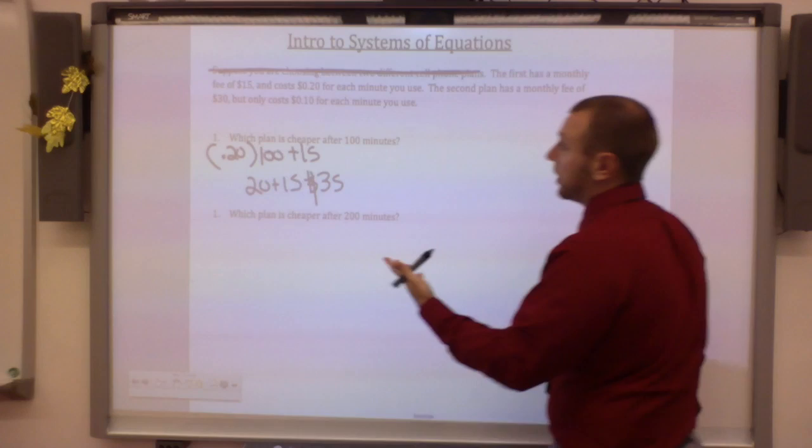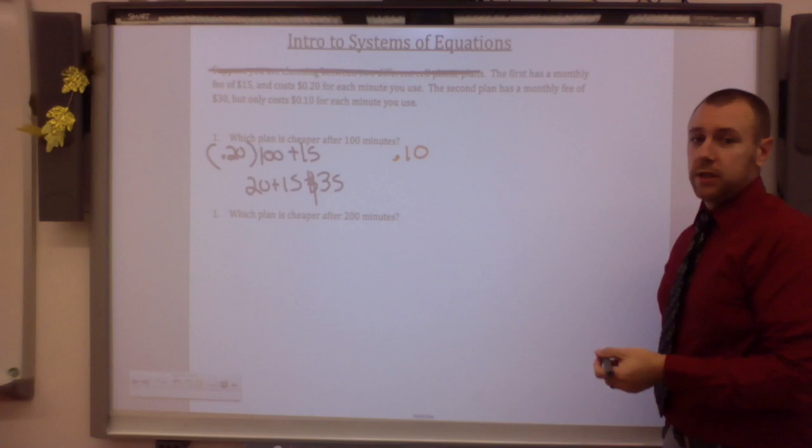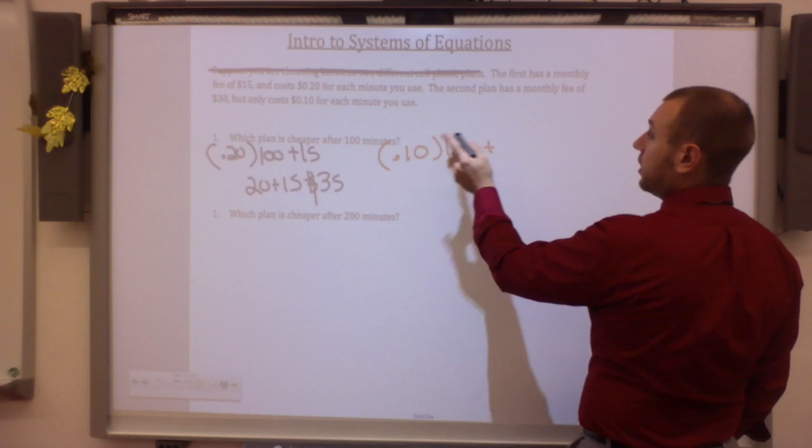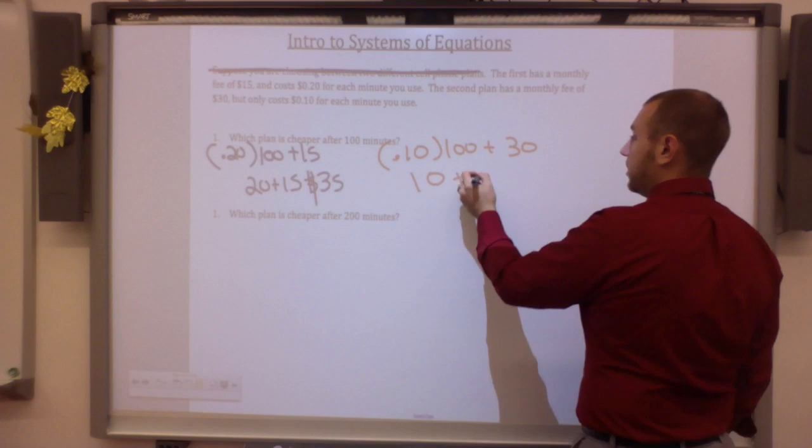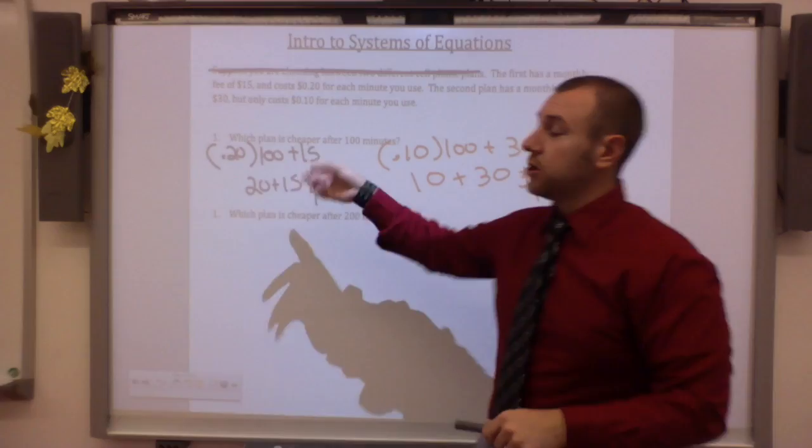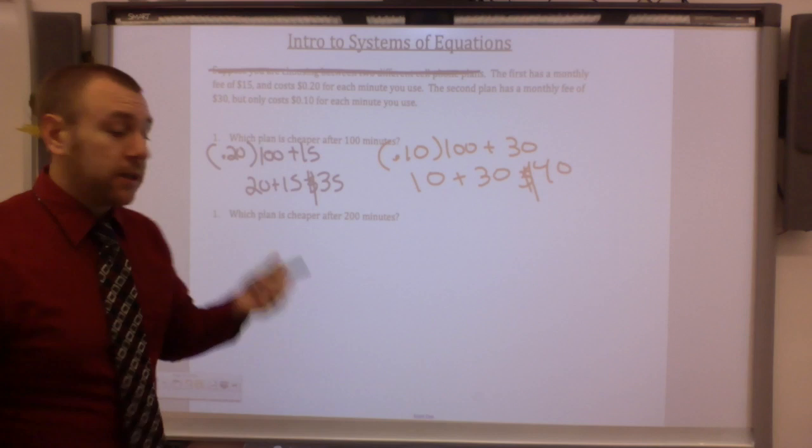Okay, that's pretty simple. Well, let's do the second one. Now it's 10 cents per minute. So 0.10 times 100, plus now it's 30. So now it's $10 plus 30, which is 40. So which one is cheaper? Well, it would actually be the first plan. It's cheaper.